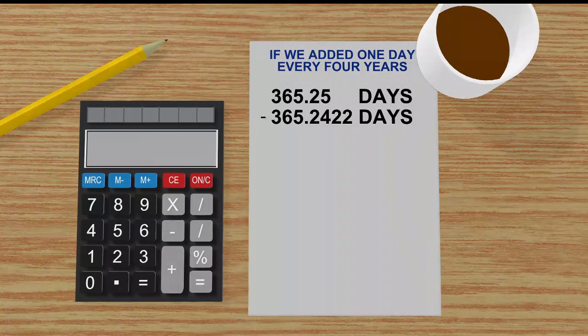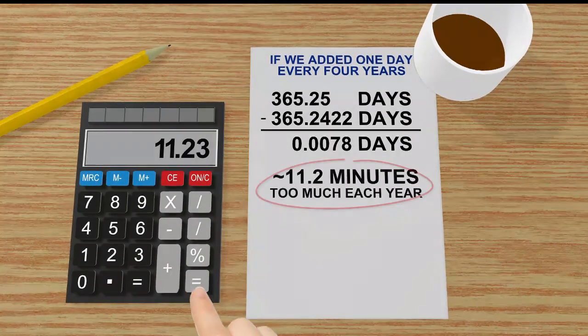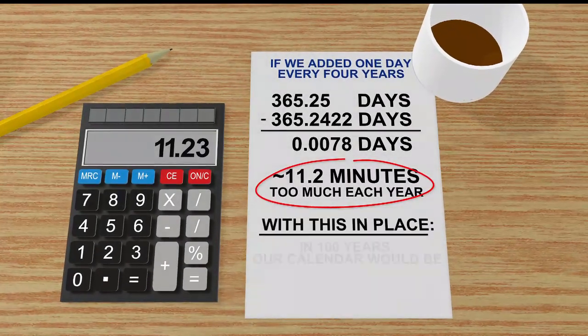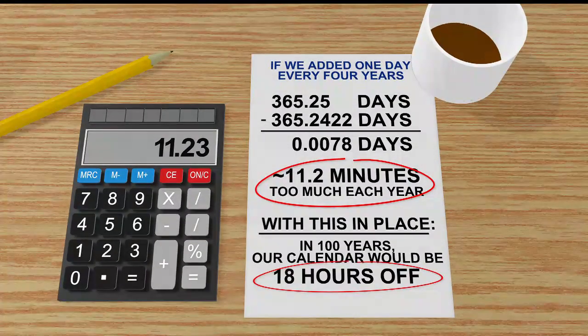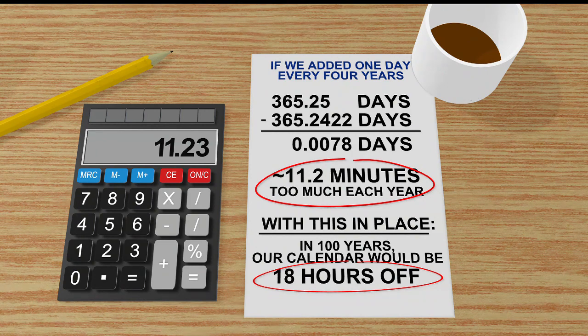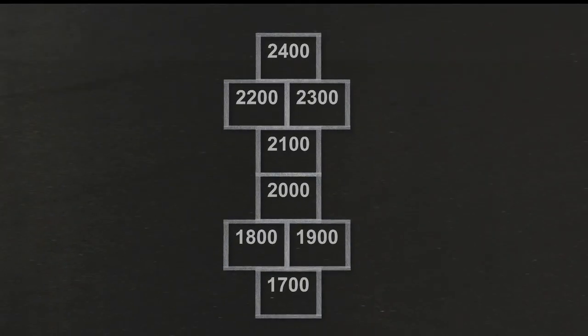If we do the math once again, we're off by 0.0078 days, which means we're about 11.2 minutes too much each year — and that would be 18 hours off every 100 years.